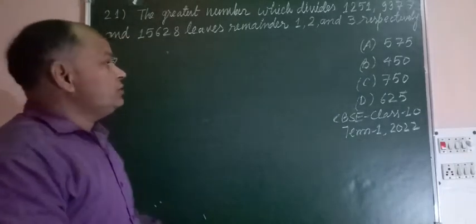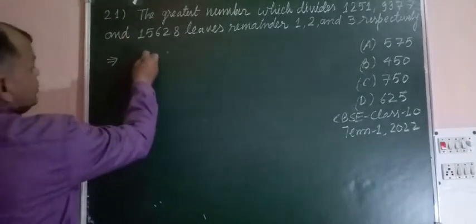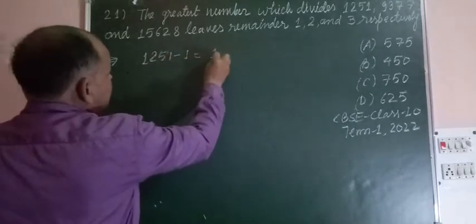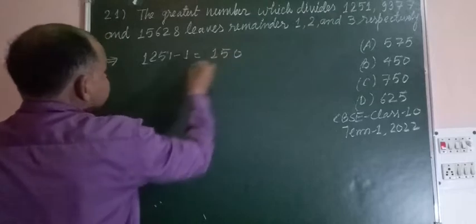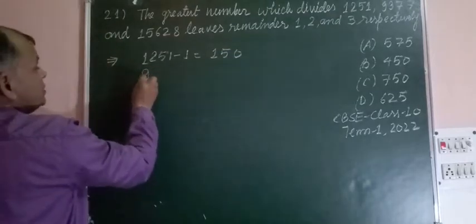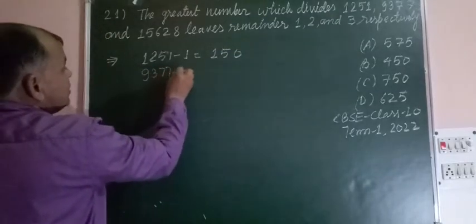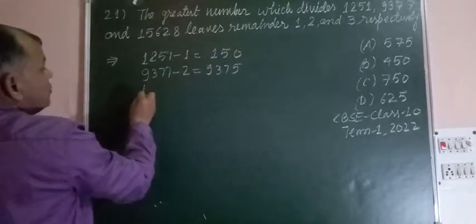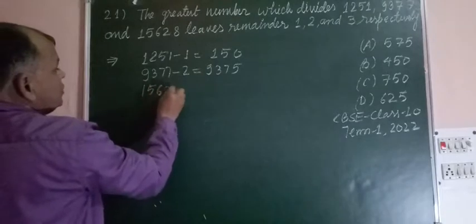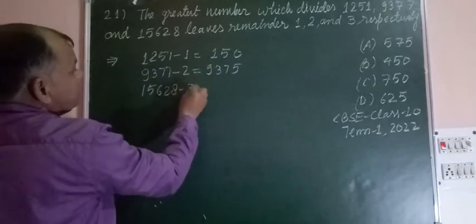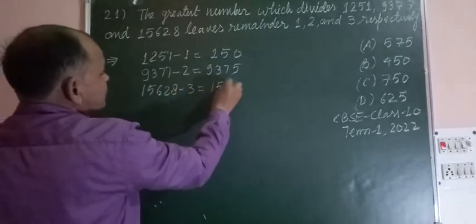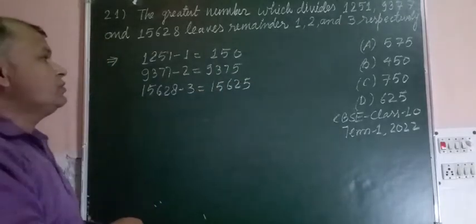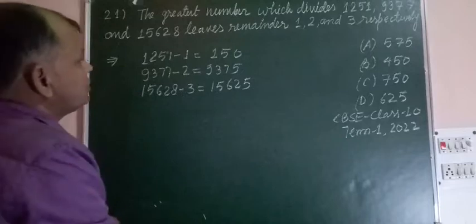Since these numbers are giving remainders 1, 2, and 3, we subtract them respectively: 1251 minus 1 equals 1250; 9377 minus 2 equals 9375; 15628 minus 3 equals 15625. So these are the numbers we get.